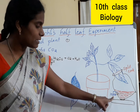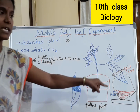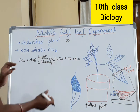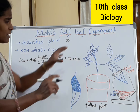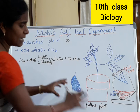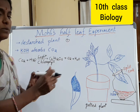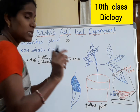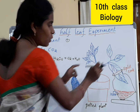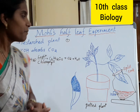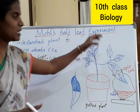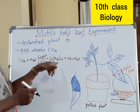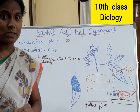The chemical we are using is KOH, to absorb the CO2 present in the half leaf of the plant. Then we should keep this apparatus set up in the sunlight, well exposed to sunlight for some time. We should slowly pluck out this leaf from the plant. Then we should subject it to a starch test to prove that starch is produced during photosynthesis.